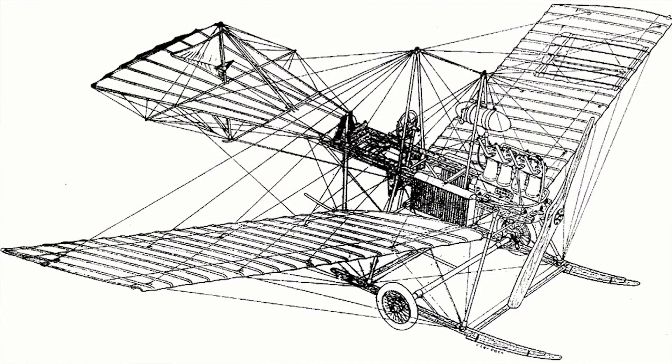Early aircraft structures used the concept of trusses. Airframes were initially made of bars, tubes and wires, such as in the Fokker Spin or Spider. The bars, tubes and wires would carry all the load. The skin or fabric did not contribute to the load bearing function.